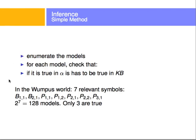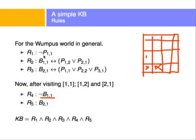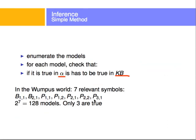The main goal is deciding whether the knowledge base entails alpha. One way to solve this is to enumerate all possible models and, for each model, check that if it is true in the knowledge base, the query is also true. There are seven relevant symbols — B11, B21, P11, P12, P22, P31 — giving 2 to the 7th possible models.